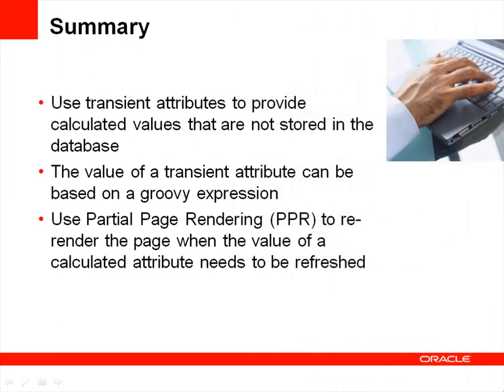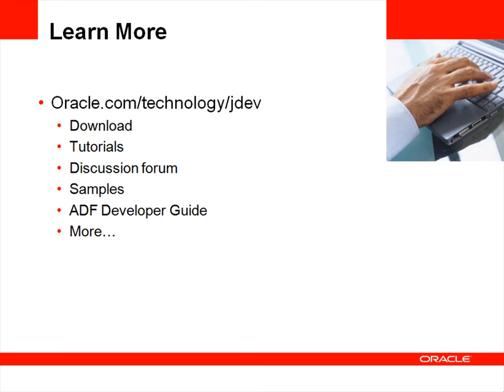In this demonstration, you've learned how to create a transient attribute that uses Groovy to calculate a total. Remember that transient attributes are useful for providing calculated values and are not stored in the database. To refresh the value of a calculated attribute, you can use Partial Page Rendering, also known as PPR, to specify the triggering component and the target component. For more information, including downloads, tutorials, discussions, and more, you can go to the Oracle Technology Network. Thank you for listening.